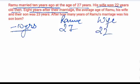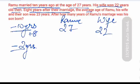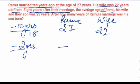So 8 years after their marriage — that means 8 years plus, so we get minus 2 years, meaning that is 2 years ago we are talking about. So 8 years after their marriage, Ramu's age at this point would be 27 plus 8, that is 35. And his wife's age would be 30.